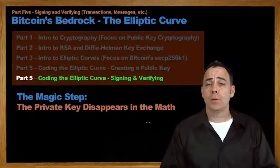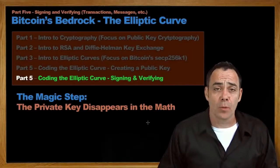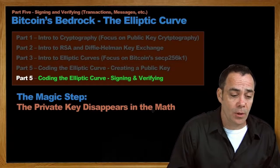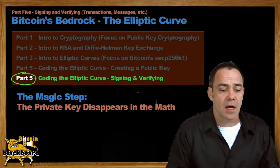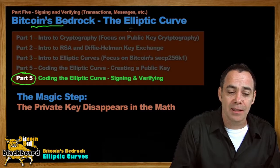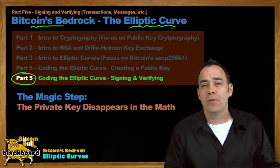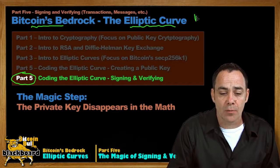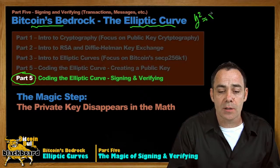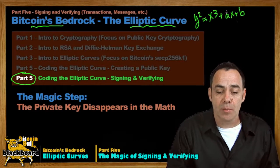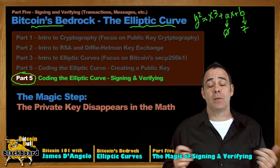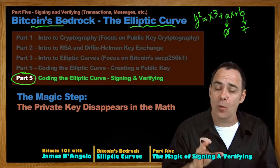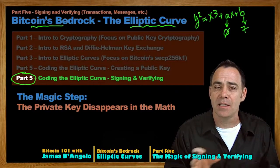Hello, this is James D'Angelo and welcome to the Bitcoin 101 Blackboard series. Today we are diving into part five of our five-part series on Bitcoin's bedrock, the elliptic curve. Specifically we've been talking about this curve, y squared equals x cubed plus ax plus b, where a equals zero and b equals seven. Today we're doing something really special that before 1976 did not exist at all.